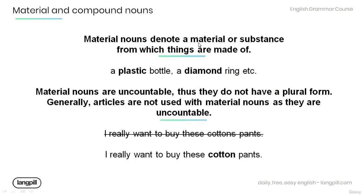Now, material nouns denote a material or substance from which things are made, as in the examples below: a plastic bottle, a diamond ring, etc. Note that the word plastic is a material noun and it is used to describe what the bottle is made of. The same thing with the word diamond — it is used to describe what the ring is made of.